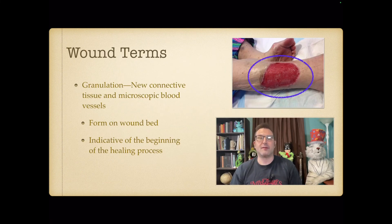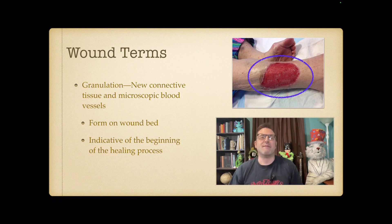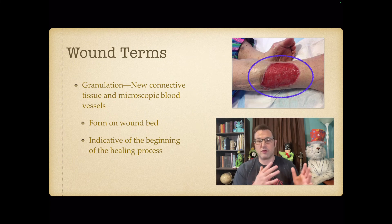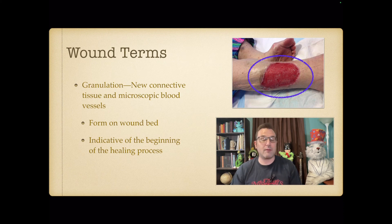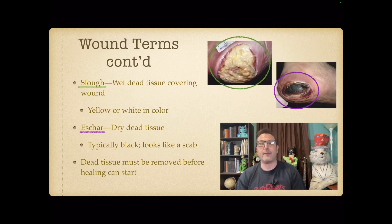The first thing we need to talk about is wound terms. You will be working with wound teams if you work in geriatrics — nutrition is a very important part of wound care, so it's good to know the vocabulary. Granulation is new connective tissue and microscopic blood vessels. It looks like little red glossy beads, it forms on the wound bed, and it's indicative of the beginning of the healing process.